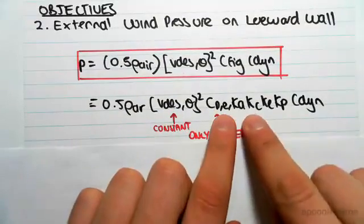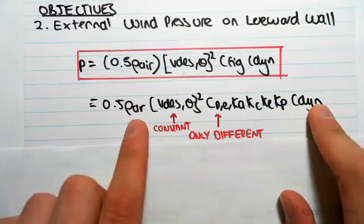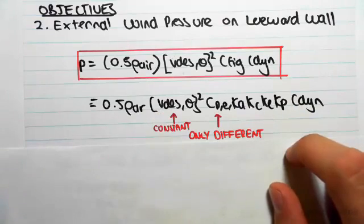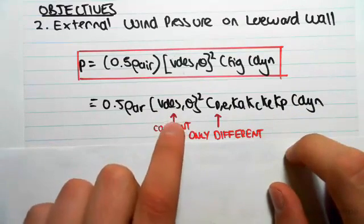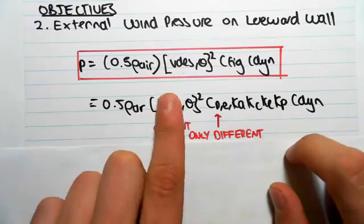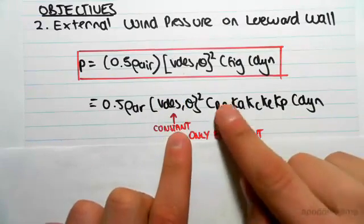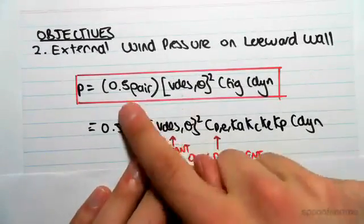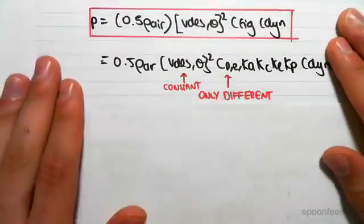We've already found in the windward case ka, kc, kl, kp, c dynamic, and the density of air, so we don't need to find those. v des theta I'm going to leave to the next video explaining that, but that's actually going to remain constant. I'm going to explain this later, so just ignore that for now. Just in this video we're going to be finding cpe.